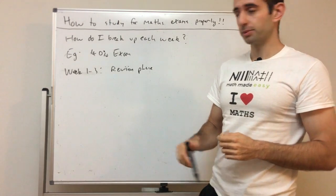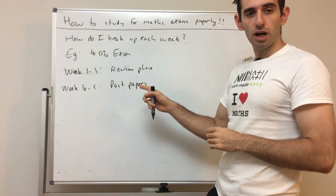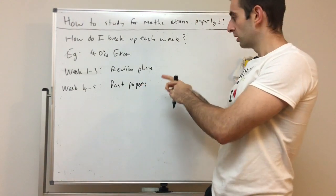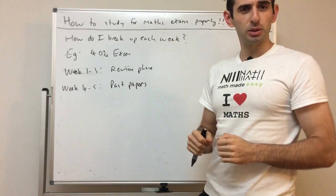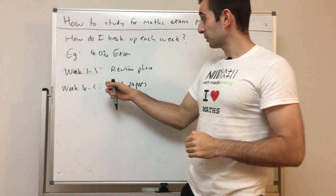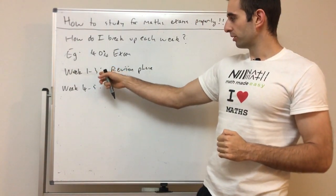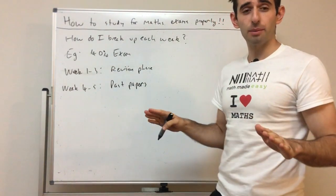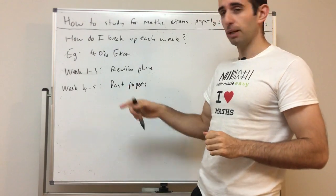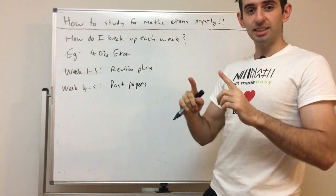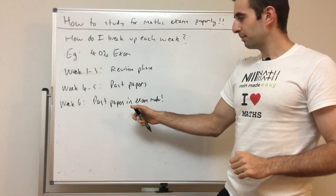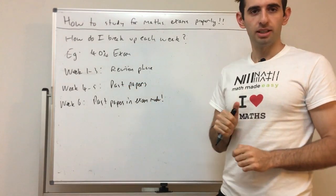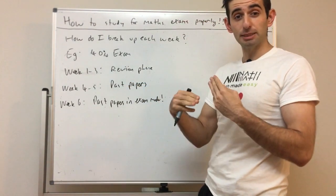Those next two weeks, weeks four to five, we want to get into those past papers casually. Get as many of those as we can in those next two weeks. If possible, start earlier. Don't have to wait till week three. If revision's gone well and you're fairly confident in everything, go to those past papers straight away. Lastly, past papers in exam mode in the last week. That last week you should be doing two to three past papers if possible for a big exam like this in exam mode.